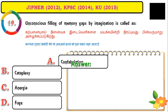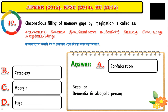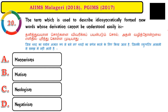Question number nineteen: unconscious filling of memory gaps by the imagination is called confabulation. This is a major problem seen in dementia and alcoholic patients. Whatever history you ask about, the person may have forgotten that information and fills the gaps with their own imagination.